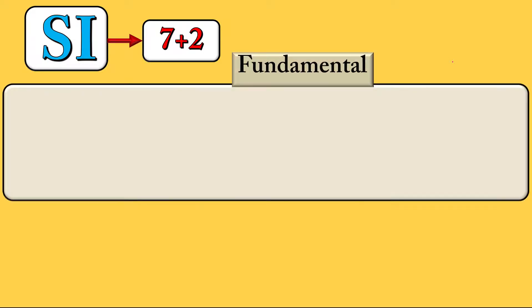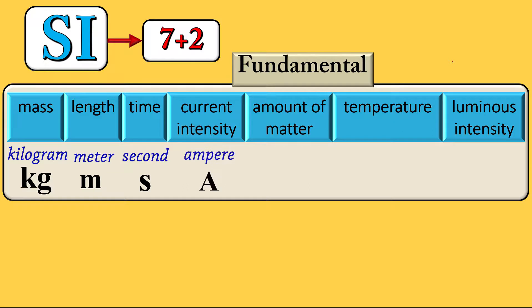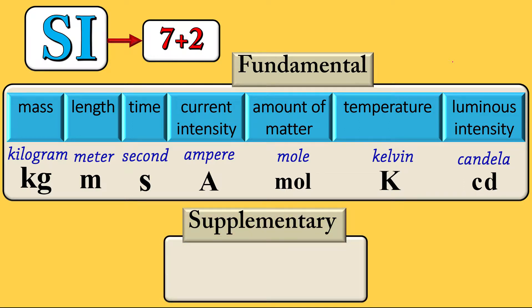The seven fundamental quantities and their SI units are: mass in kilogram, length in meter, time in second, current intensity in ampere, amount of matter in mole, temperature in kelvin, and luminous intensity in candela. I can also add two supplementary units from mathematics: radian for plane angle and steradian for solid angle.